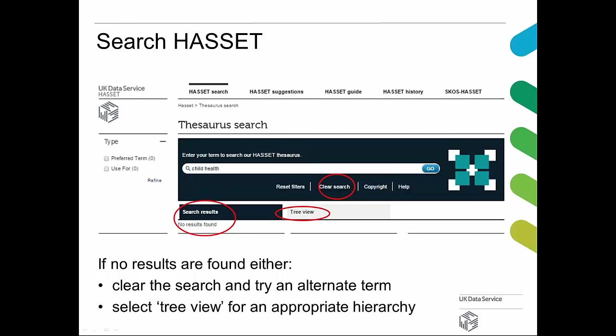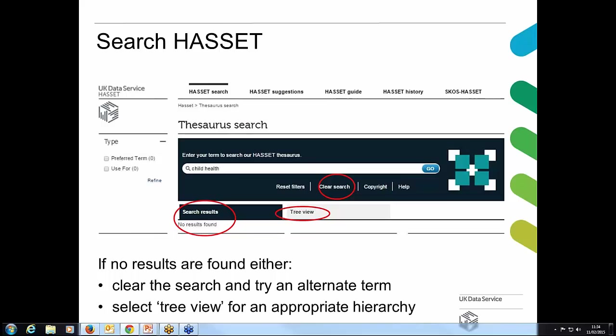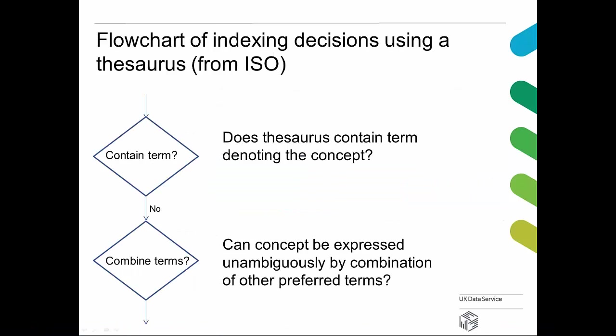We enter a term — in this case I've put in 'child health' — and there are no results found. You can either clear the screen and try an alternate term, or select the tree view for an appropriate hierarchy. Does the thesaurus contain the term? No, it doesn't. So can the term be expressed unambiguously by a combination of other preferred terms? If we go in via the tree view, we can explore further.